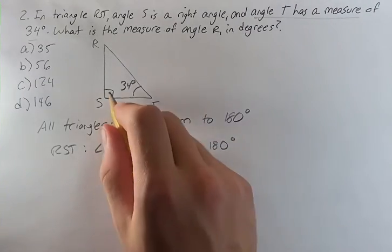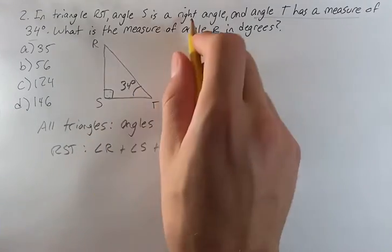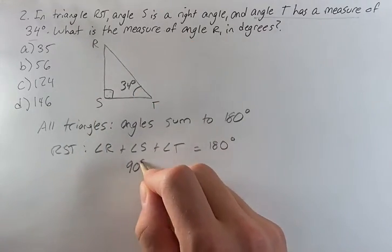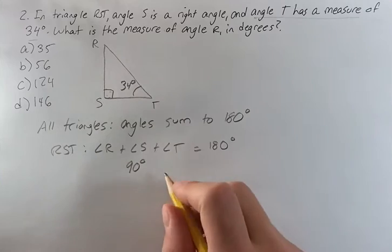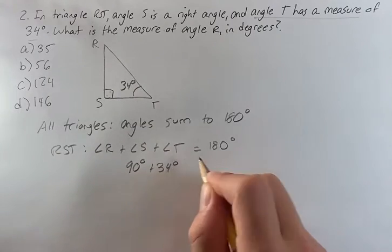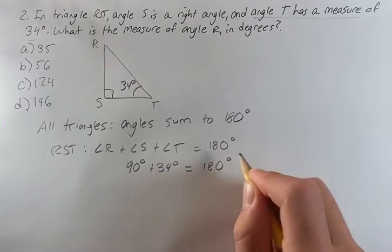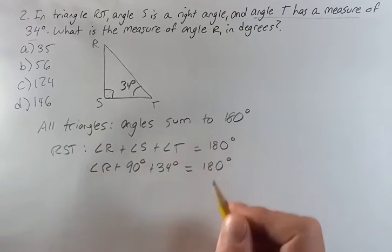And since we know two of the angles, S is a right angle so that's 90 degrees and T we have given is 34 degrees, equals 180 degrees. When we add R to the mix we can solve for R.